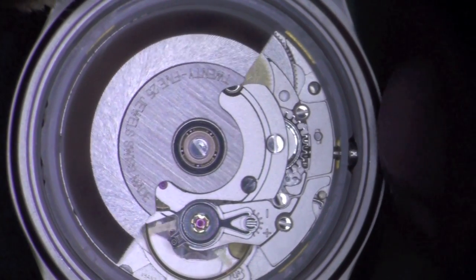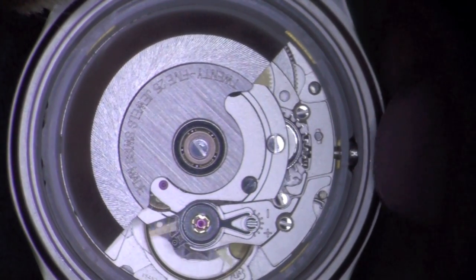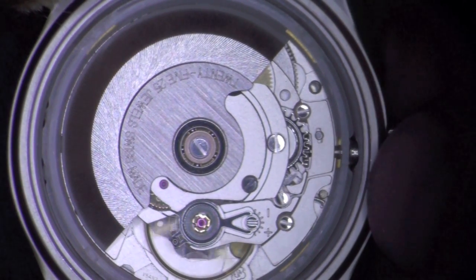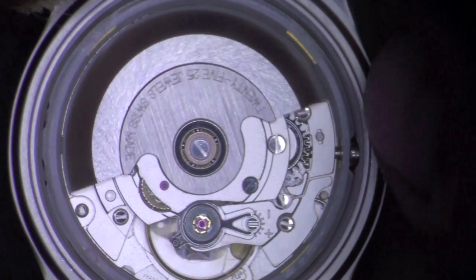When properly serviced, the oscillating weight should freely rotate in both directions with minimum angular deflection. You should also feel the reverser's freedom when the watch is manually wound.